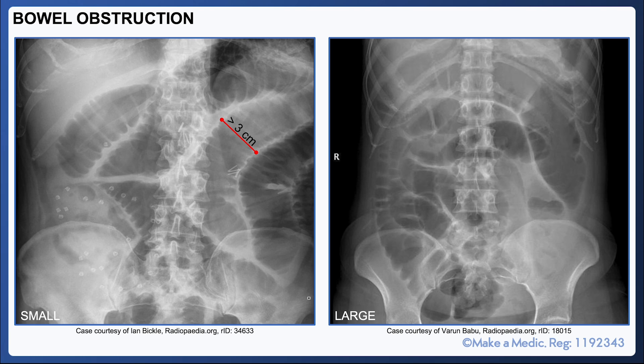In small bowel obstruction, the loops of bowel are usually greater than three centimeters in diameter. Furthermore, there are folds in the mucosa of the small bowel that are visible across the entire width of the bowel — these are called valvulae conniventes.